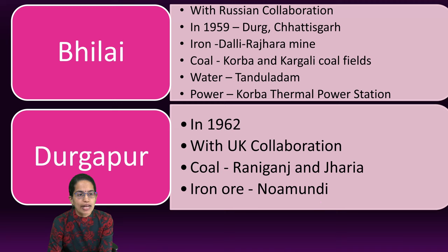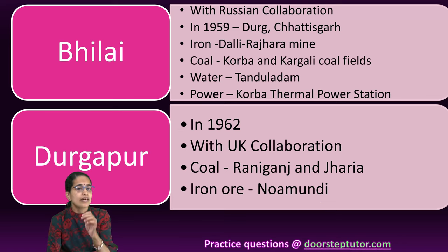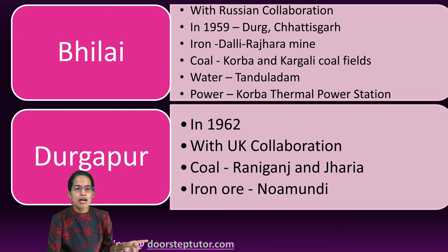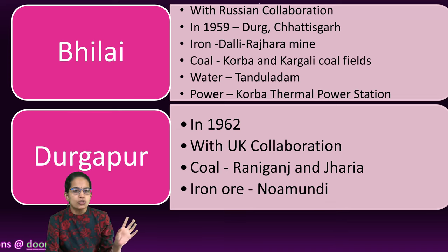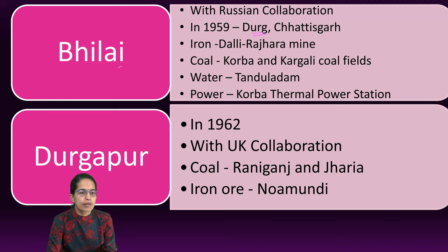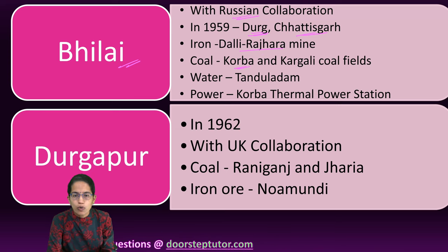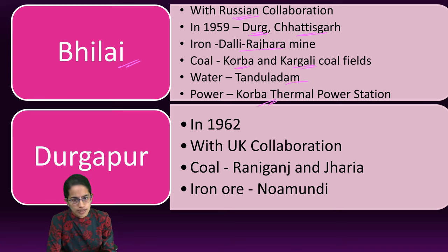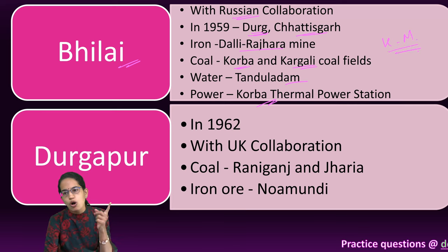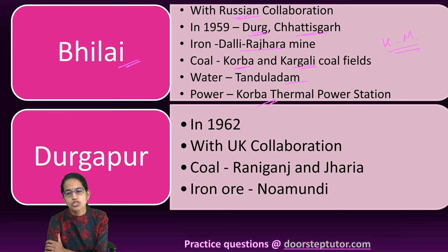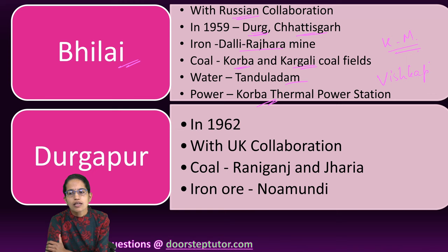Bhilai came with Russian collaboration and Durgapur came with UK collaboration. Bhilai was established in Durg — remember, Durgapur is not in Durg; Bhilai is in Durg. Bhilai is in Durg, Chhattisgarh. Iron comes from the Dalli Rajhara Mines, coal from Korba and Kargali Mines, water from Tandula Dam, and power from the Korba Thermal plant. The Bhilai plant lies on the Kolkata-Mumbai railway line, and most of the steel produced goes to Hindustan Shipyards through Visakhapatnam.